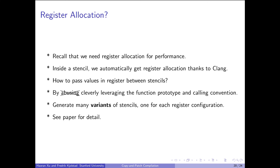Now let's look at how we implement some optimizations. Recall that we need register allocation for performance. Since a stencil is just an ordinary C++ function, inside the stencil, thanks to Clang, we already automatically get those optimizations. But the problem is how can we pass values in CPU registers between stencils. It turns out that we can solve this by cleverly leveraging the function prototype and the calling convention. We need to generate many variants of each stencil, one for each register configuration. See the paper for details.